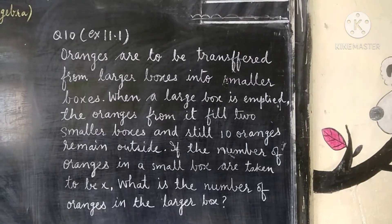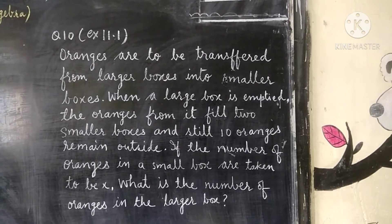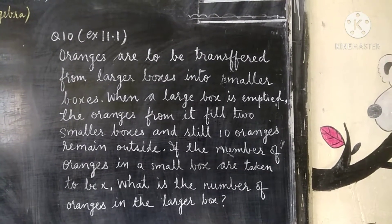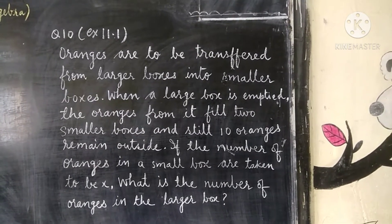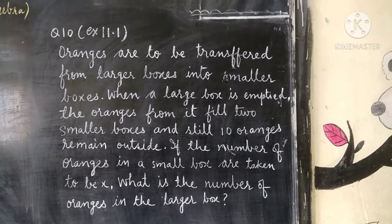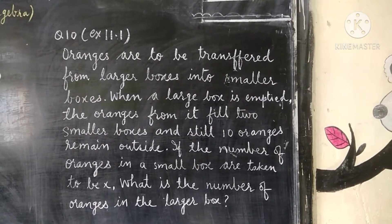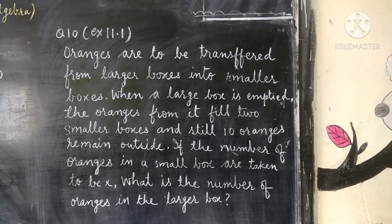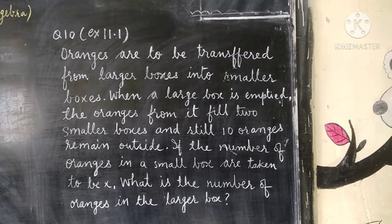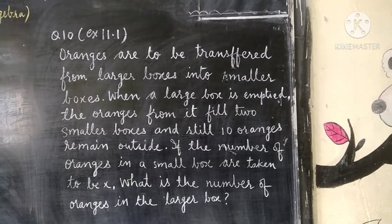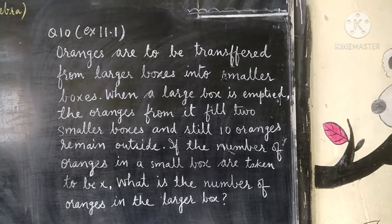Question number 10, Exercise 11.1. The question is: oranges are to be transferred from larger boxes into smaller boxes. When a large box is emptied, the oranges from it fill two smaller boxes and still ten oranges remain outside.